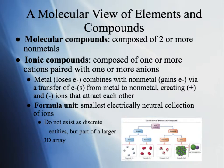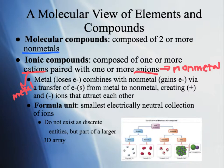Molecular compounds are composed of two or more nonmetals. Ionic compounds are composed of cations paired with anions. Cations are metal atoms that lose electrons to become positively charged. Anions are nonmetal atoms that gain electrons to become negatively charged. When electrons transfer from metal to nonmetal, the resulting positive and negative ions attract each other to form a bond and create a compound.